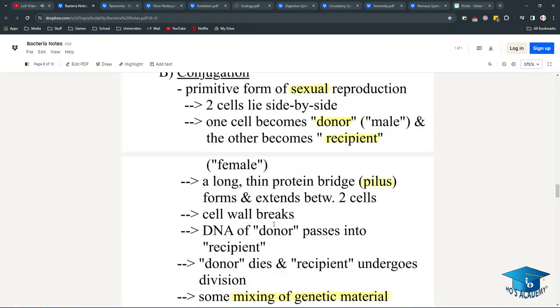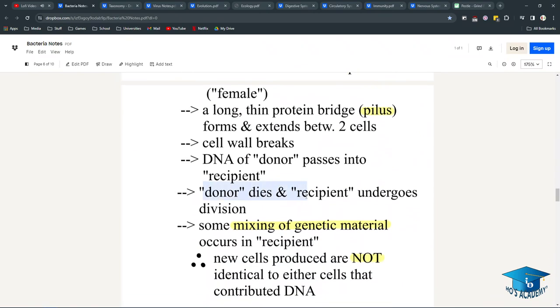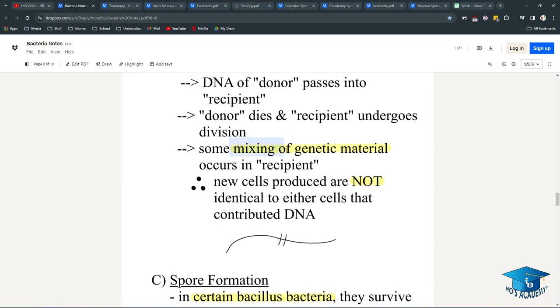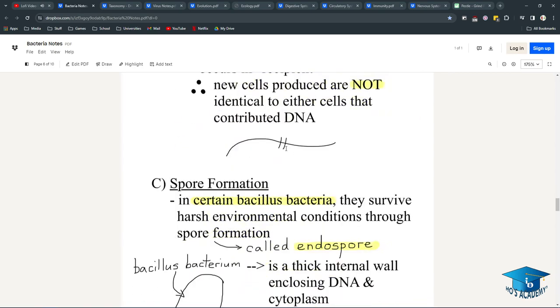The donor will transfer DNA to the recipient. The donor will die and the recipient will undergo division. So you have two cells, one dies, and you get a new cell. New cells are not produced, but new cells that replace the dead cell have DNA contributed by two different bacteria, which allows for genetic diversity. That's why this is an important process even though new cells aren't necessarily created.